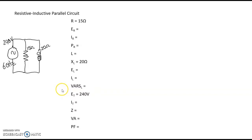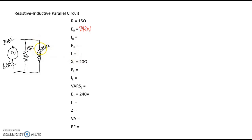Most of you have taken DC fundamentals, and so you should already know that one of the features of a parallel circuit is the applied voltage is the same across all branches. So the voltage across the resistor is also 240 volts, and the voltage across the inductor is also 240 volts.